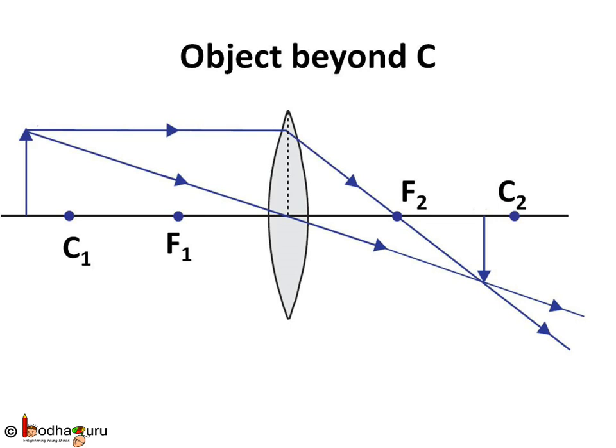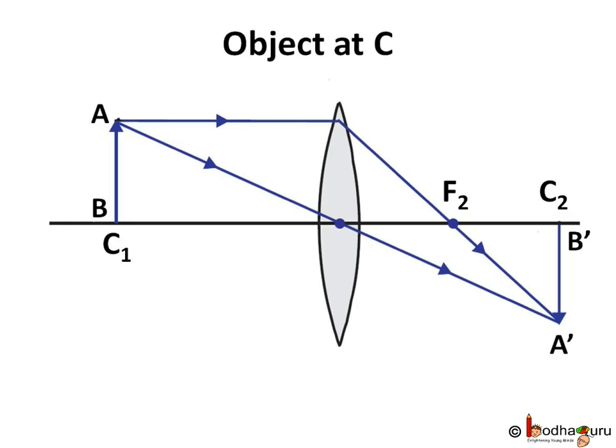...from the top of the object going through the optical center O and it won't deviate—it will pass as is. Find the point where both rays meet and we will get a real, inverted, diminished image on the other side of the lens between the focal point F2 and center of curvature C2.